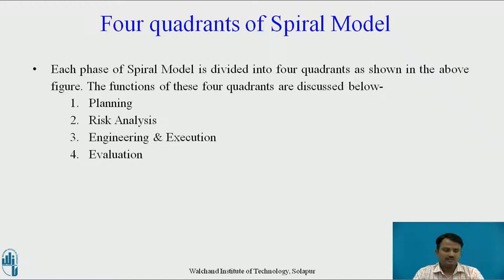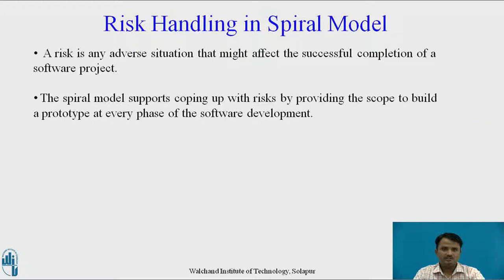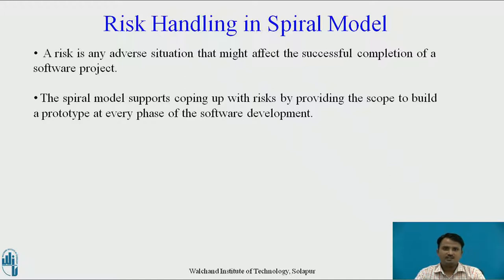The last phase is the Evaluation Phase. This phase allows the customer to evaluate the output of the project to date before the project continues to the next spiral. Regarding risk handling: a risk is any adverse situation that might affect the successful completion of a software project. The most important feature of the spiral model is handling unknown risks after the project has started. Such risk resolutions are easier done by developing a prototype, and the spiral model supports coping with risks by providing scope to build a prototype at every phase of software development.